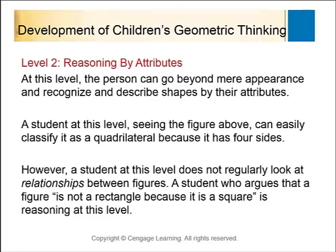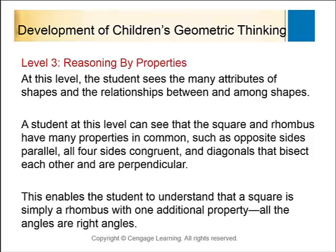The next level is reasoning by attributes. A student at this level might say a figure is not a rectangle because it's a square, even though it really depends on your definition. You have to figure out what the definition is — understanding whether rectangles include squares and looking at different attributes like side lengths and angles. Another level is reasoning by properties, which goes beyond just angles and also considers diagonals — whether those diagonals bisect each other or are perpendicular.